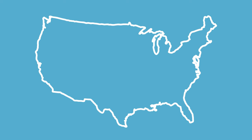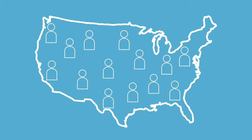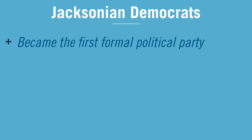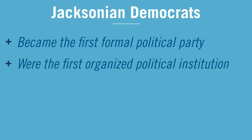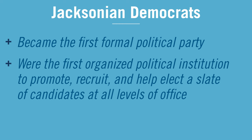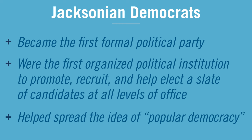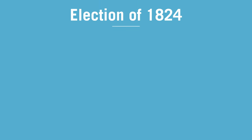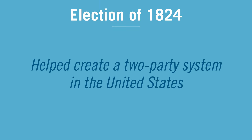In the years following the election of 1824, Jackson's supporters opened offices around the country to coordinate his campaign message. The new Jacksonian Democrats became the first formal political party and were the first organized political institution to promote, recruit, and help elect a slate of candidates at all levels of office. These campaign tactics helped spread the idea of popular democracy. Andrew Jackson went on to win the election of 1828 by a landslide. In hindsight, it became clear that the election of 1824 helped create a two-party system in the United States.